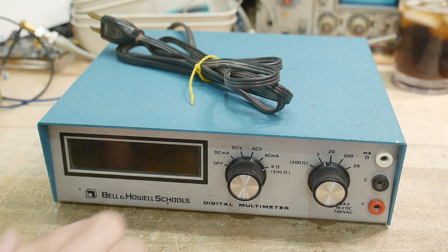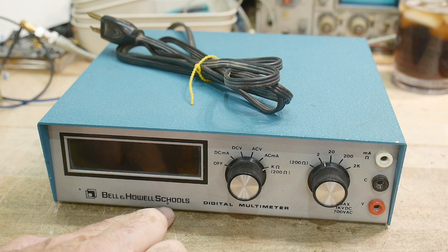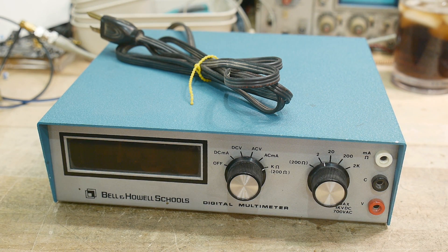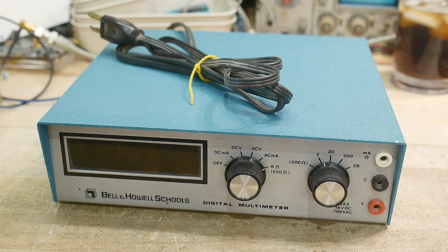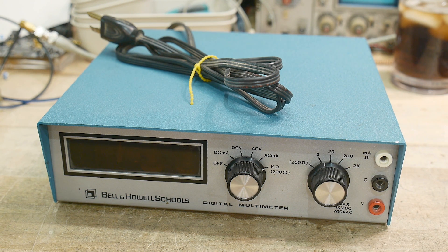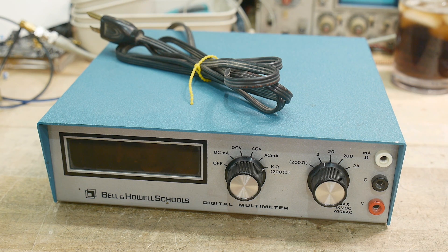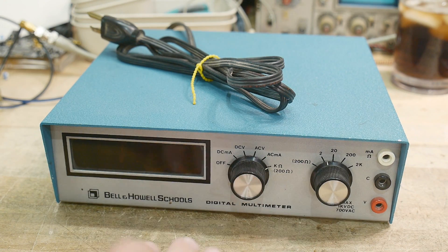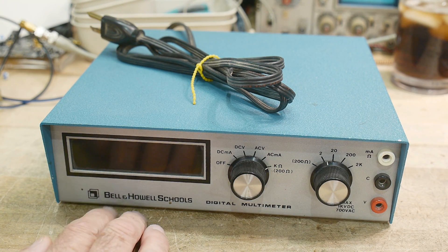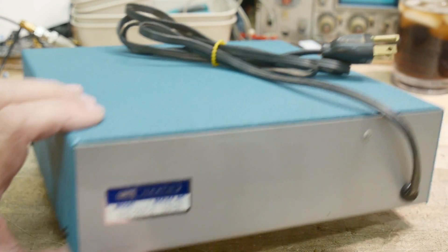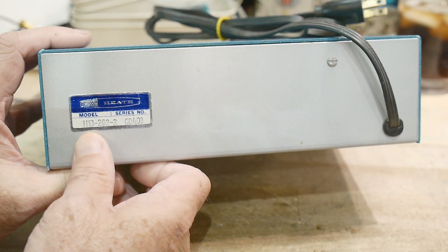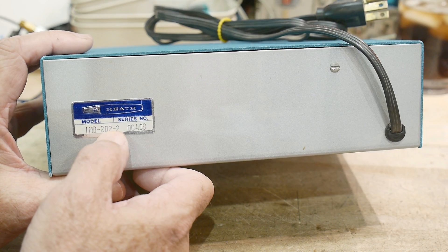All right, what's on the bench today? It's a Bell and Howell Schools multimeter. Bell and Howell had a curriculum that went to certain schools, maybe a homeschool type thing. These were actually built by Heathkit, and on the back you can see there is a Heath sticker. This is a model IMD 202-2.